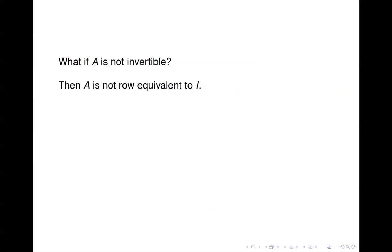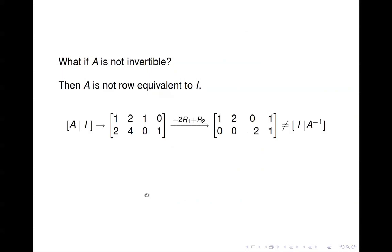What happens if A is not invertible? In that case, it's not row equivalent to the identity. Here's the example where the second column is a multiple of the first. Tack on the identity matrix, do one row operation, and you get a row of zeros — A is not row equivalent to the identity matrix, so you can't get it into [I | A⁻¹] form. That tells you the matrix A does not have an inverse. If you can't get A to look like the identity matrix by row operations, then A is not invertible.